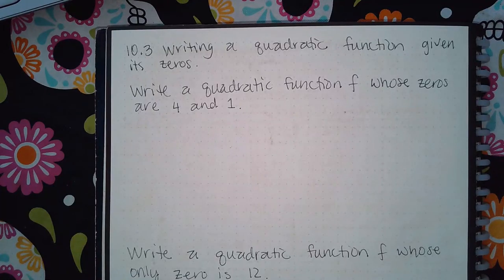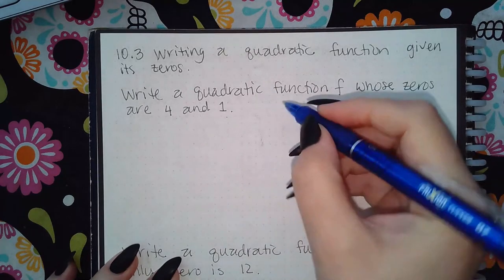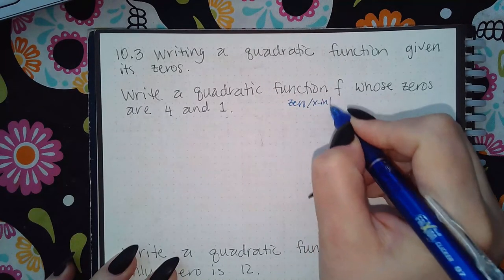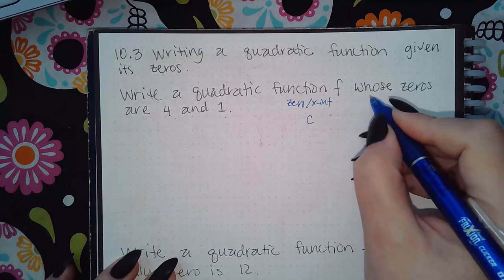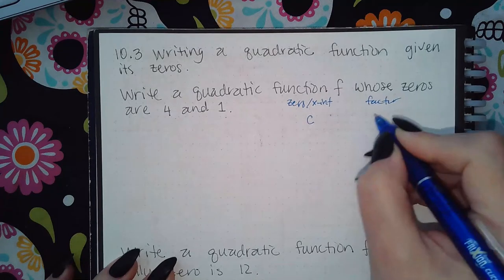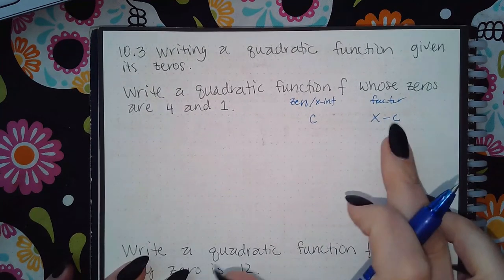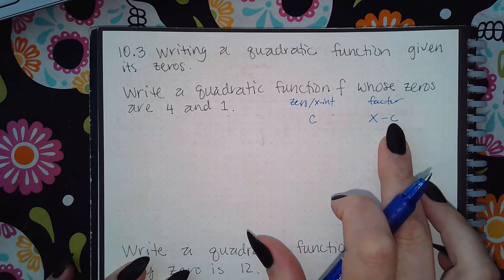Here we have 10.3: writing a quadratic function given its zeros. If you have the zero or x-intercept at this value, the factor will look like this with the opposite sign inside the factor. Notice that this was a positive c and in the factor it's a negative c.